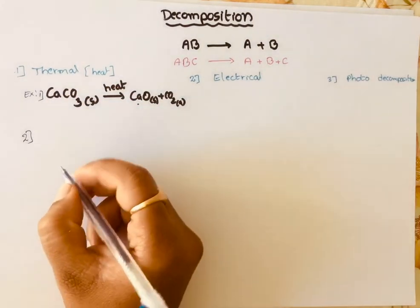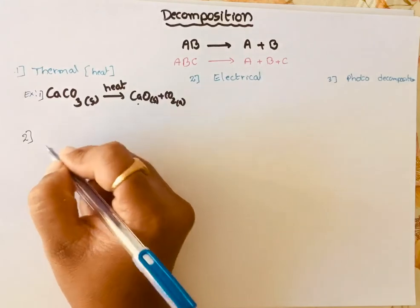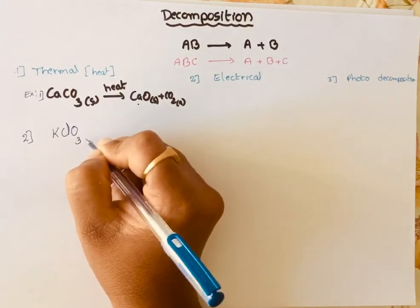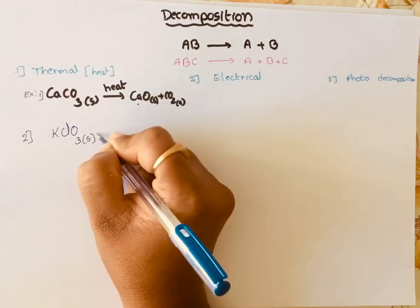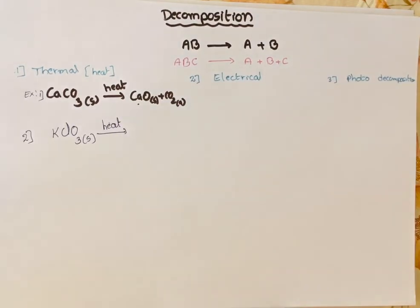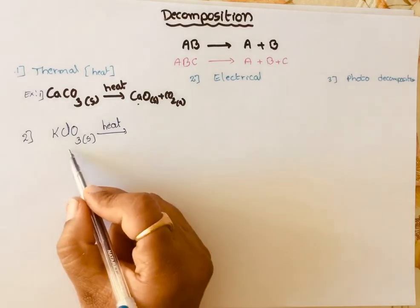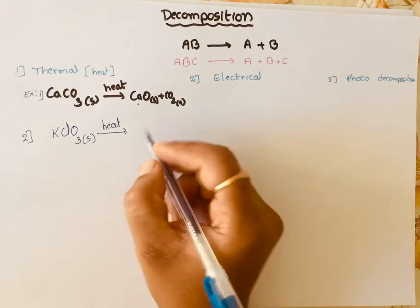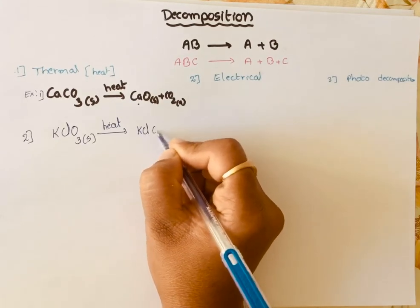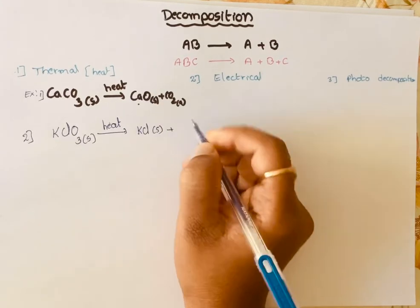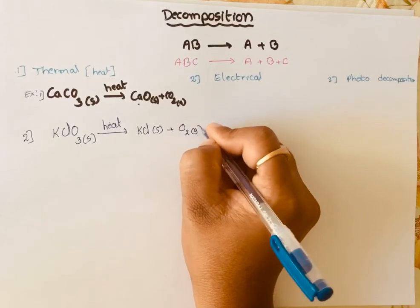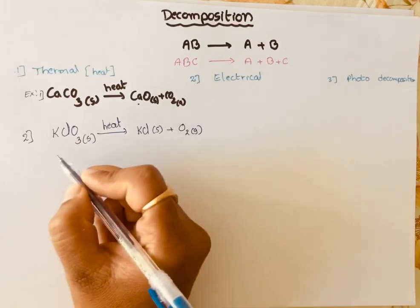Similarly, another example is potassium chlorate, which is a solid. When you heat this compound — thermal decomposition means you heat the reactant — it undergoes dissociation into potassium chloride as well as releasing oxygen gas.